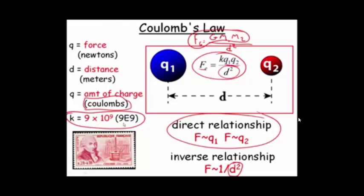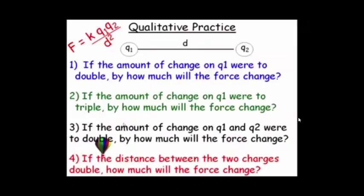Just like before, let's put it together in a qualitative type of practice. The first one, if the amount of charge on charge one were to double, how much would the force be changing? Well, that's a directly related idea. It's like a teeter-totter, right? There's the fulcrum. If we were to increase that side of the teeter-totter and make it bigger, the other side has to increase in order to make it balanced. So, if we double this, we must double the other side. It should be double the force.